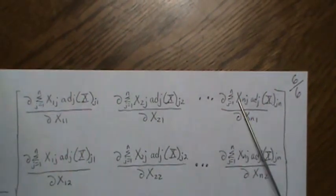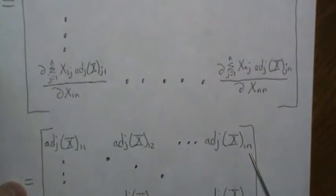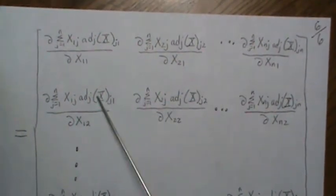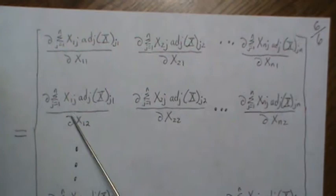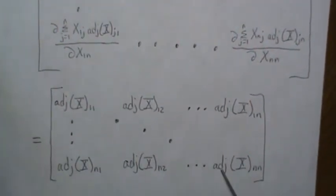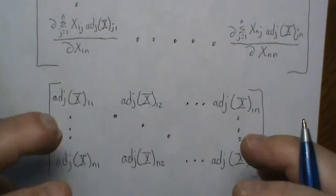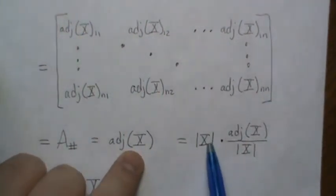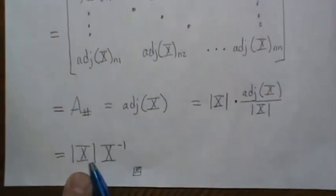The same argument holds for every element. Since we expanded across the respective row, none of the cofactors in that row contain the variable we're differentiating with respect to, so only one term survives in each case and its partial is 1. The result for each component is just the corresponding cofactor, which is a component of the adjunct matrix. As a whole, the derivative matrix is exactly the adjunct matrix. Since the adjunct matrix equals the determinant of X times X-inverse, we can write it as det(X) times X-inverse.